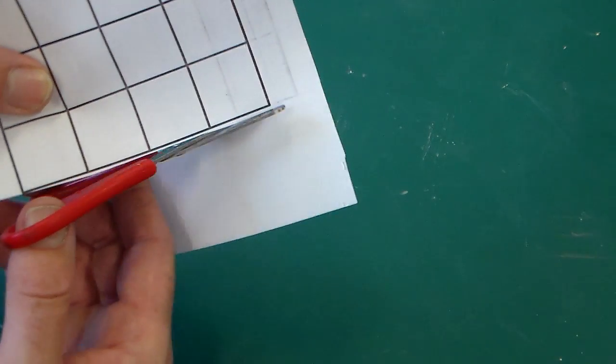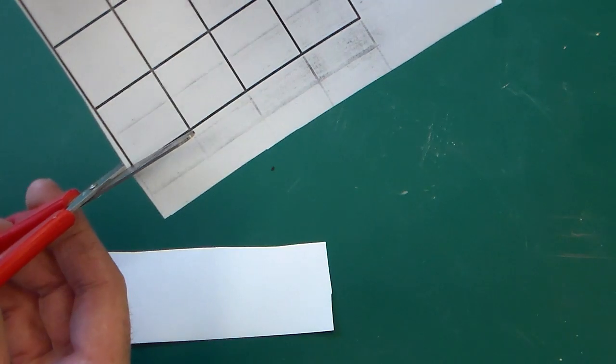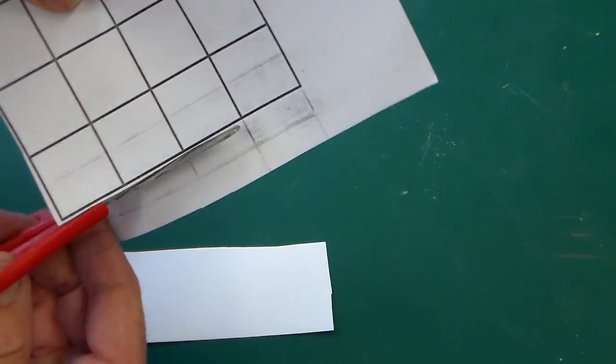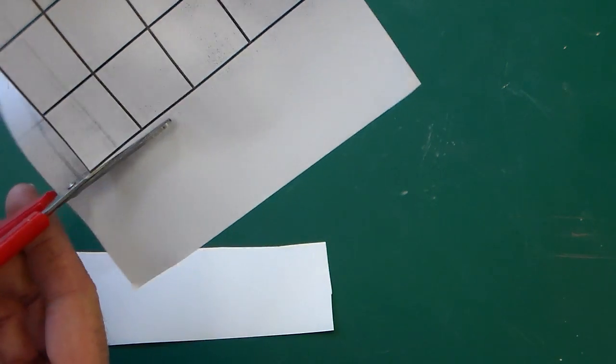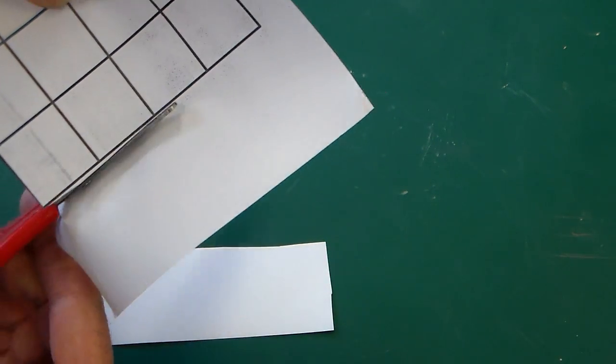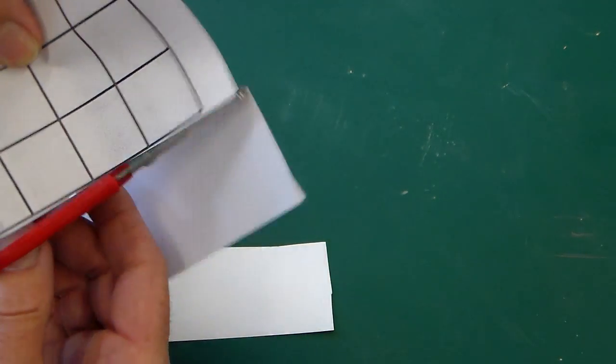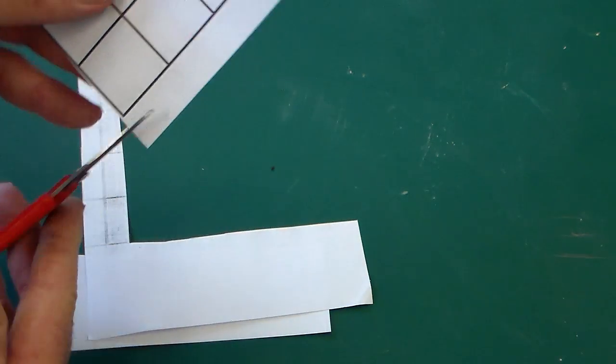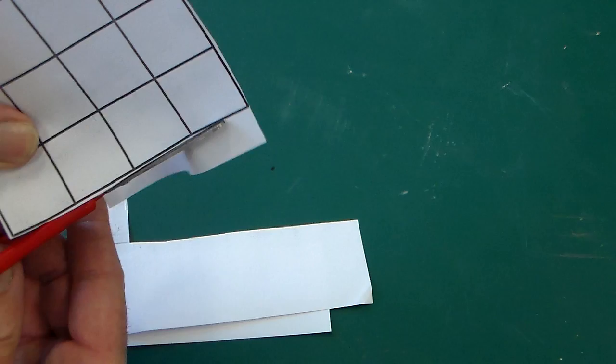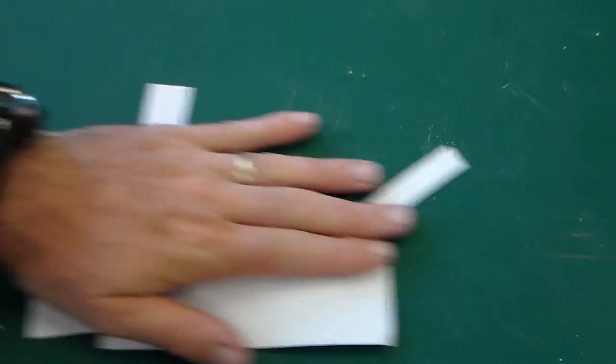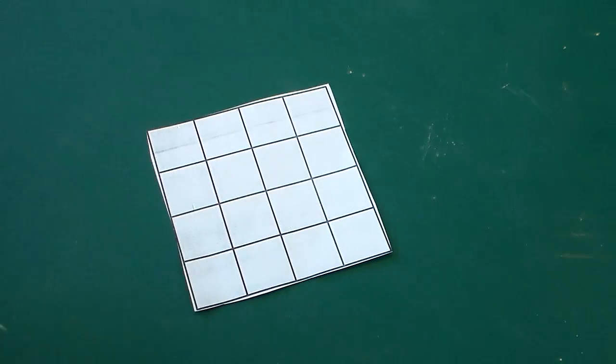There might be two of these on a sheet, and it might be worth if you have your tangram puzzle to check that this will fit in and just trim it accordingly. Once you've done this, we're ready to start marking it out.